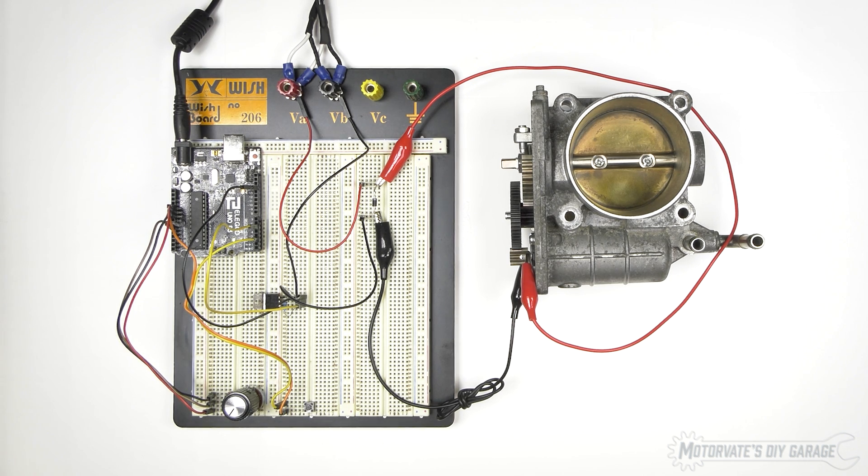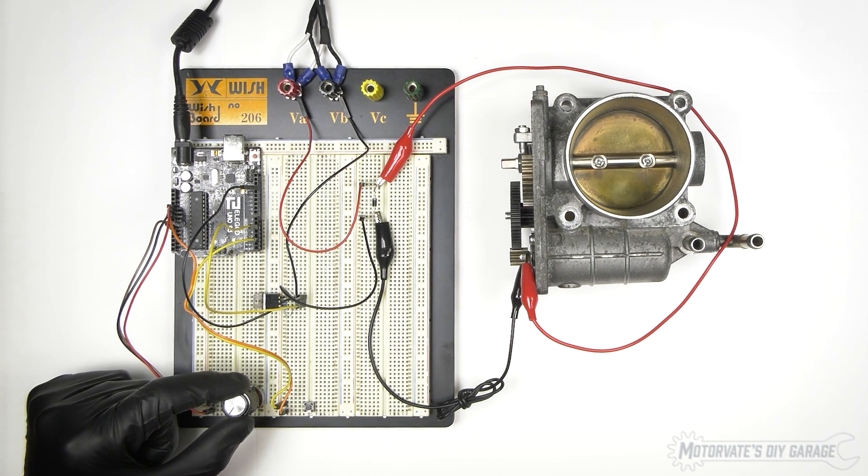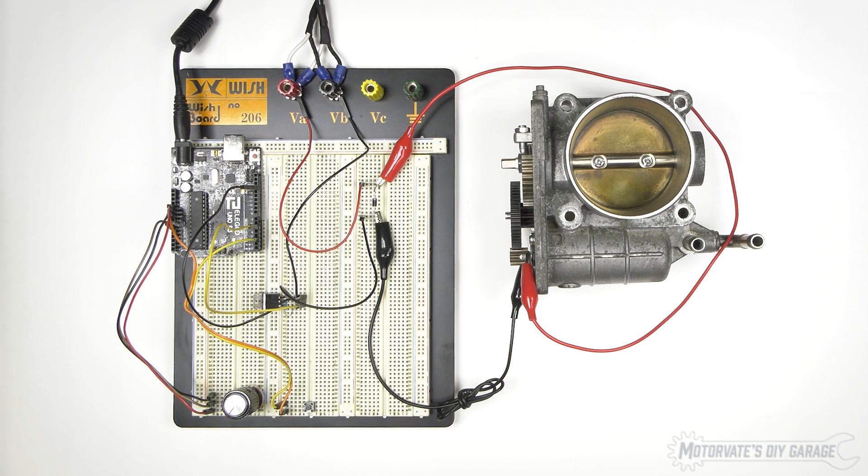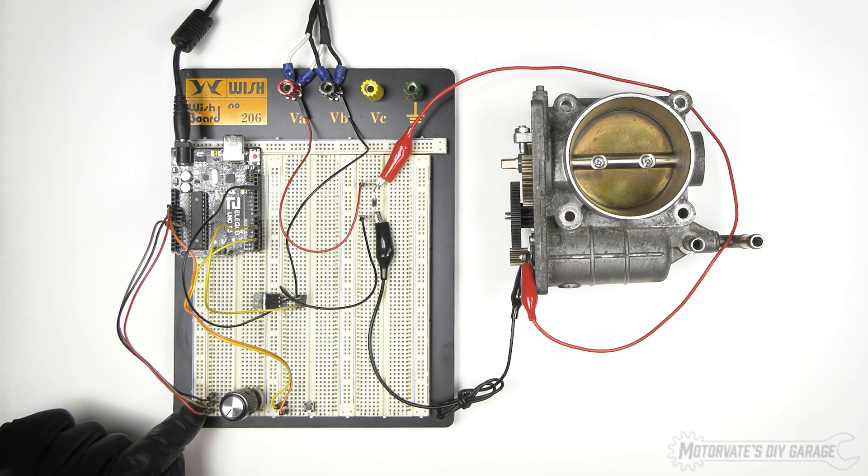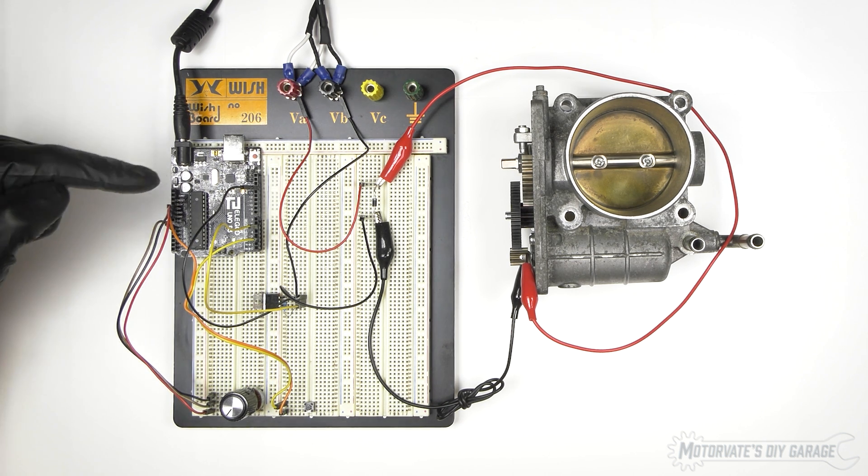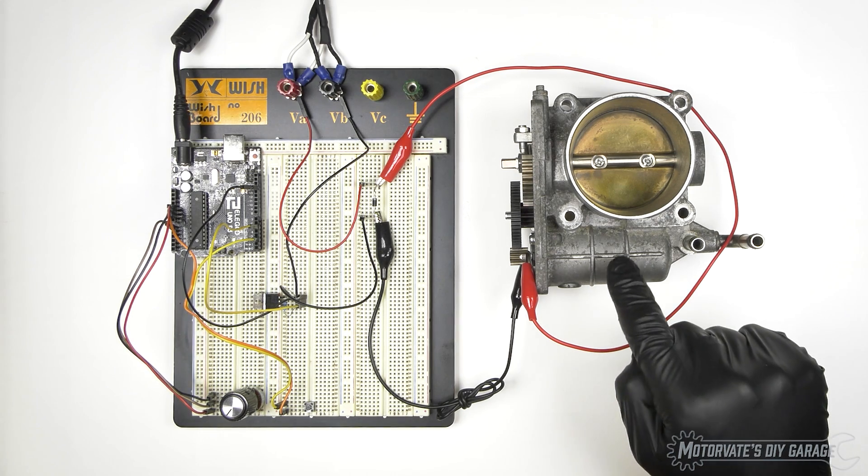Let me talk about the different components we have here. We have our pedal position sensor, we have our ECU, and of course, we have our throttle body. With the pedal position sensor, a change in position causes a change in output voltage. This output voltage is read by the ECU. The ECU then will control the motor in the throttle body.